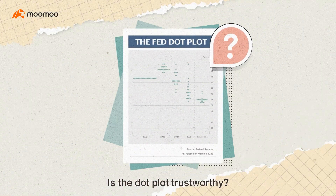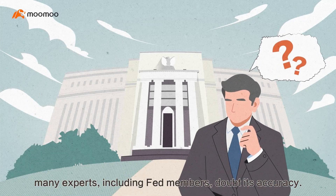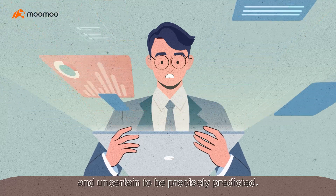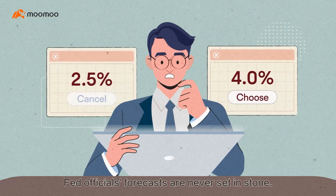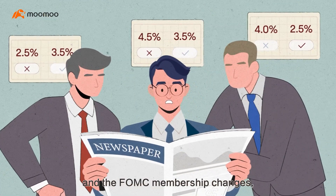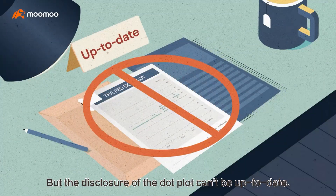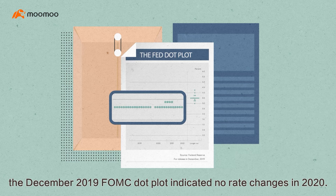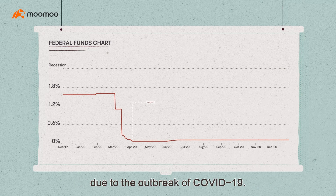Is the dot plot trustworthy? Although people closely follow the dot plot chart, many experts, including Fed members, doubt its accuracy — because the economy is too complex and uncertain to be precisely predicted. Fed officials' forecasts are never set in stone. As information about the economy shifts and the FOMC membership changes, their attitude may change, but the disclosure of the dot plot can't be up to date. For instance, the December 2019 FOMC dot plot indicated no rate changes in 2020, but the Fed lowered the rate to nearly zero due to the outbreak of COVID-19.